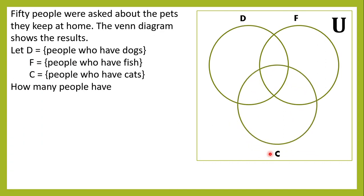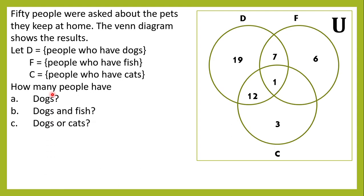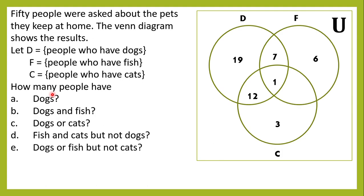Let's now have our third example, which involves three sets. 50 people were asked about the pets they keep at home, and the Venn Diagram shows the results. Let D represent people who have dogs, F represent people who have fish, and C represent people who have cats. The values in the Venn Diagram are already given. We have seven questions to answer.